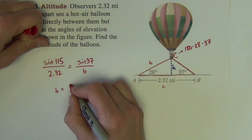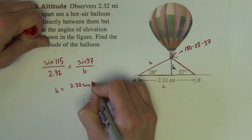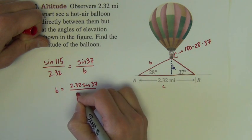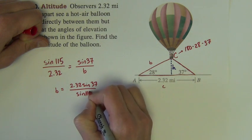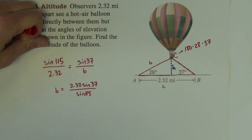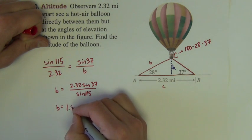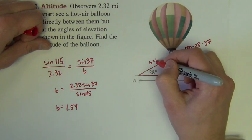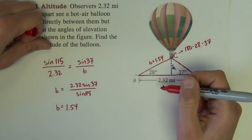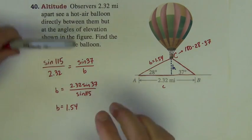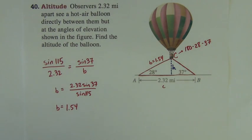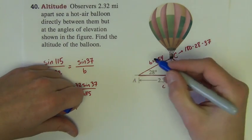So, little b is 2.32 sine of 37 over sine of 115. That comes out to be a little b of 1.54. Okay, it's great, but it's not the altitude of the balloon, so we're not done yet.